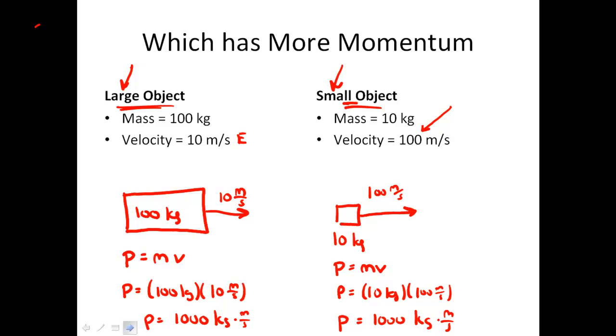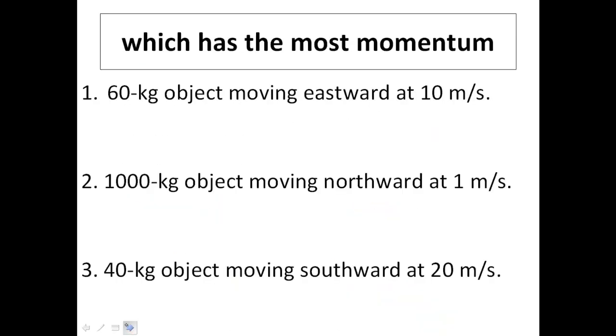It's really cool stuff when you start crunching the numbers in momentum. Even those little tiny electrons, they have momentum. They just have a very small amount of momentum because although they're moving fast, their mass is so small relative to their velocity.